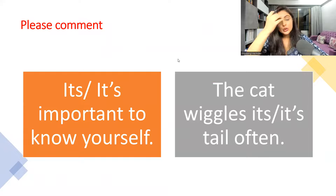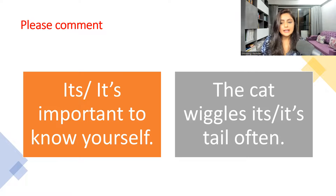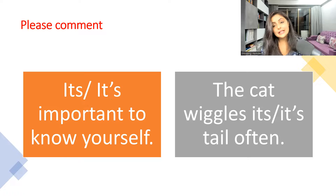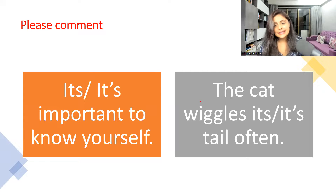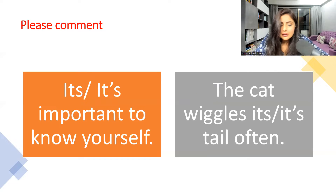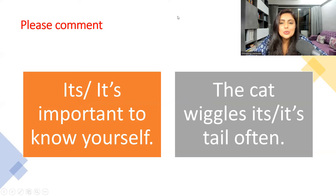Now it's time for you to comment and tell me what you've learned. I've given you two sentences: first, 'It's important to know yourself' — which 'its' is correct? Can I say 'it is important to know yourself'? Second, 'The cat wiggles its tail often' — here I think we're talking about possession. Comment and tell me which is correct! If you'd like me to make videos on concepts you're unclear about, please comment. Thank you friends, see you soon. Goodbye!